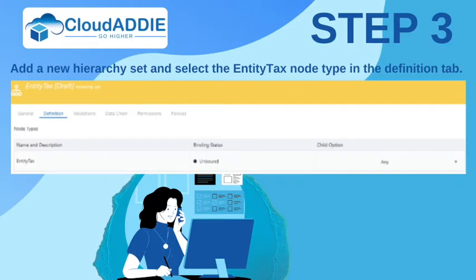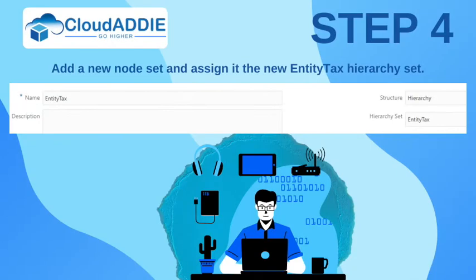Add a new hierarchy set and select the EntityTax node type in the Definition tab. Then add a new node set and assign it to the new EntityTax hierarchy set.